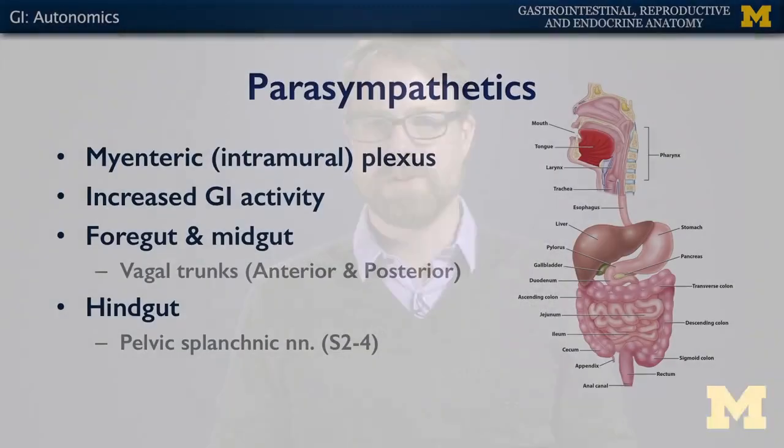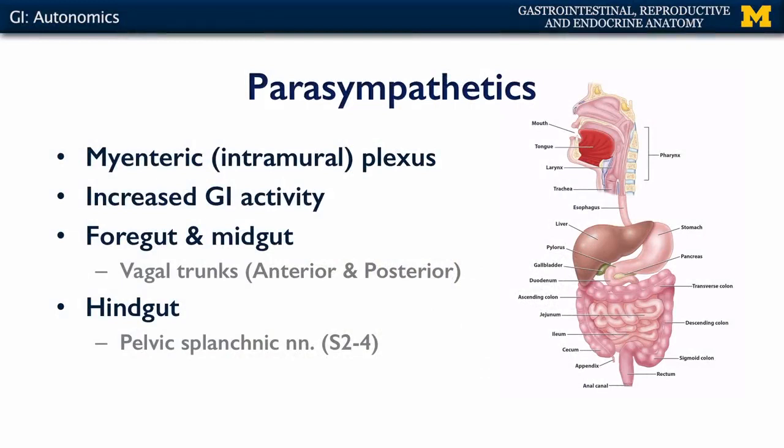Looking at the parasympathetic outflow to the gut tube, the foregut and the midgut are served via the vagal trunks, whereas the hindgut is served by the pelvic splanchnic nerves, which are branches of sacral nerves two, three, and four.